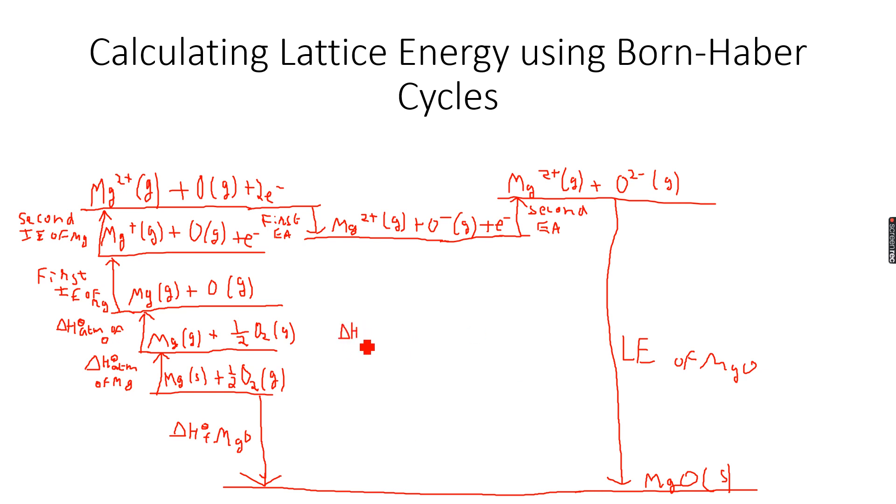So again, we will use the formula. Delta H°f is equal to delta H plus lattice energy. We make lattice energy the subject, so LE is equal to delta H°f minus delta H.